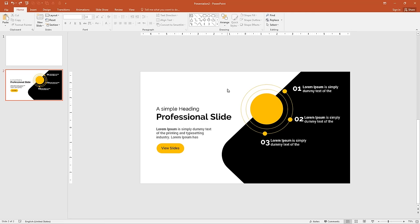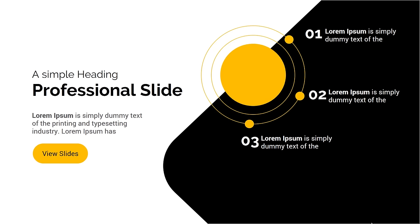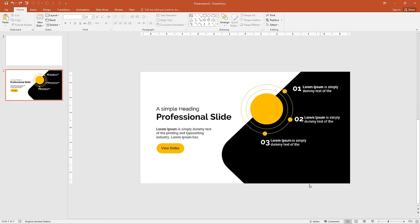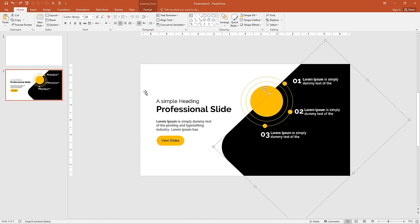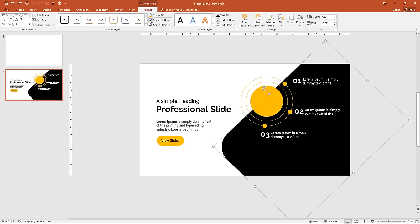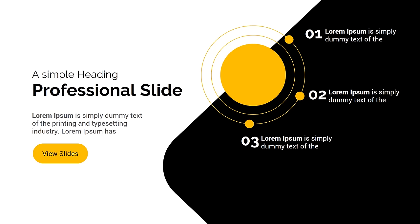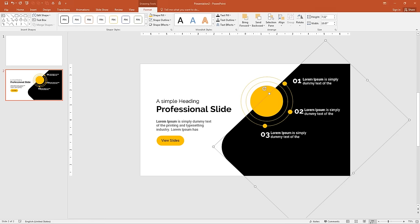The slide design is now completed. Let me show you how it looks. There is a border on the rounded rectangle, so let me remove it. Click on the rectangle, go to Format and remove the shape outline. Here is the final slide.